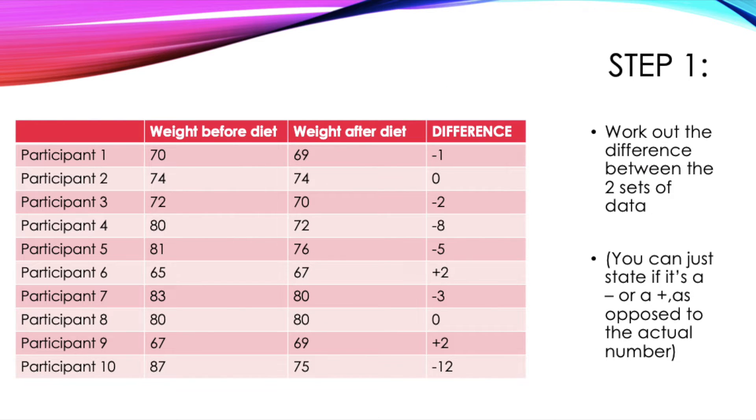Once we have all of our data, the first thing to do is work out the difference between the two sets of data. For example, the weight of the first participant before the program was 70 and after the program was 69, so that's a difference of minus 1. As I've stated here, you can just state whether it's a positive or a negative as opposed to the actual number. You don't need to know the actual number, the only important thing is that we've got the signs correct.